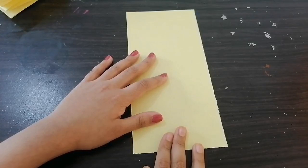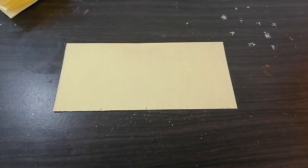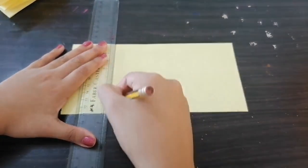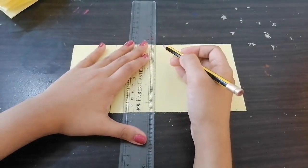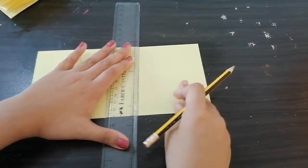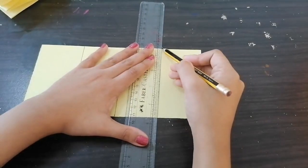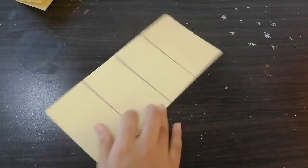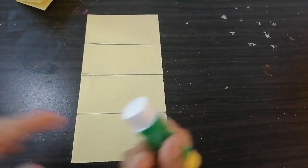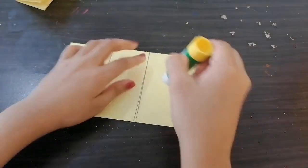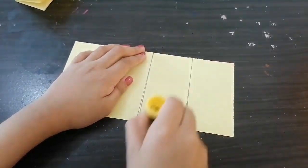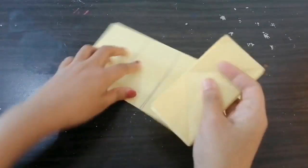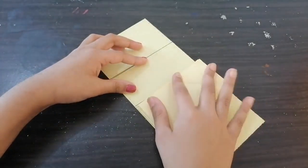Now take our 22 by 10.5 centimeter paper. You need to mark 5.5 centimeter intervals. Now this is ready. Take the glue and apply it on the middle one. Now take this and stick it on the middle one.